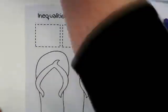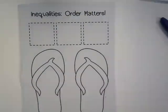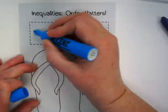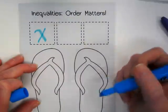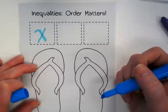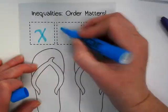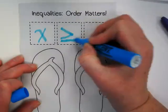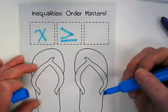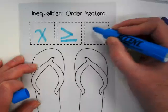We did do this last year, but I want this in your notebook for this year as well. In the first box, I would like you to put the variable X. In the second box, you're going to put the inequality greater than or equal to. In the last box, we're going to put the number 7.